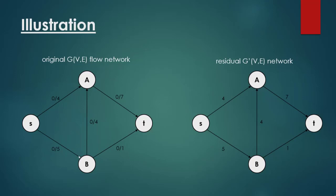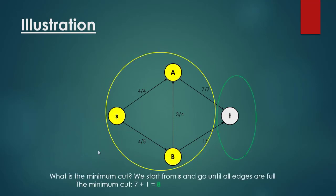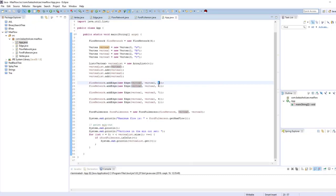This is the flow network we are considering: source, vertex A, vertex B, and the sink T. We would like to get the maximum flow, which is equal to 8. The source vertex has only outgoing edges — we have 4 plus 4, which is 8. The minimum cut is basically two disjoint sets: {S, A, B} and the lonely T in the other set.